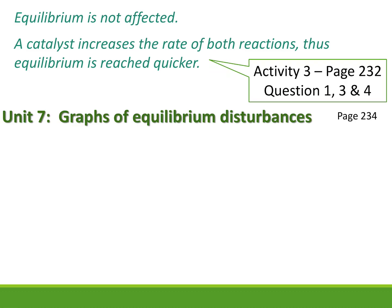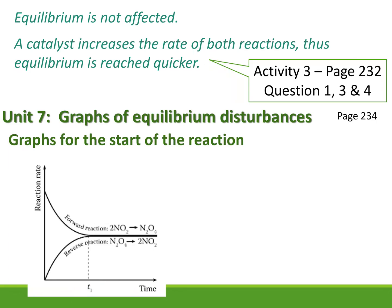Let's look at graphs of equilibrium. We're going to use a reaction as an example just so you can see how the graphs work and get an idea of the shapes. The reaction is 2NO2 becoming N2O4. At the beginning, the forward reaction is high and the reverse reaction is low — they eventually meet and equilibrium is reached.